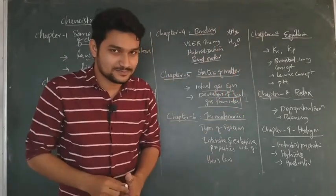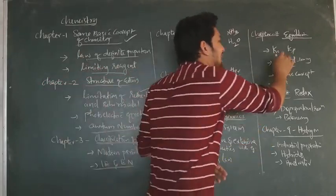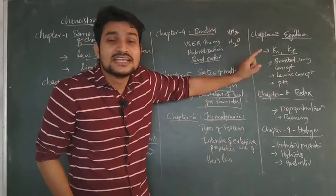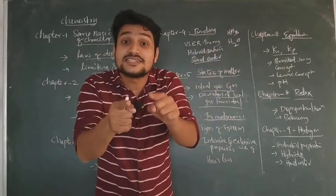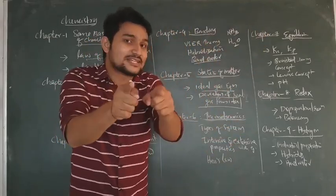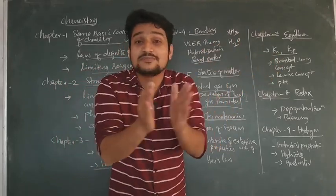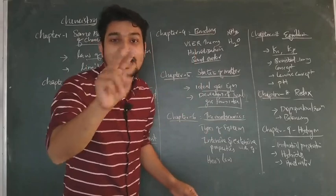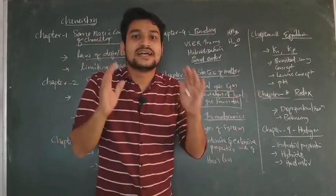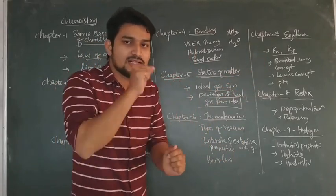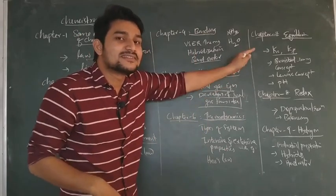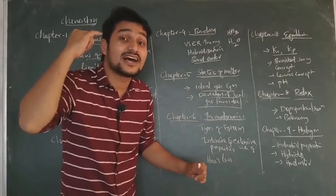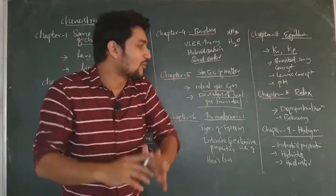Chapter 7 is equilibrium. You will learn Kc and Kp — Kc is the equilibrium constant, and Kp is the equilibrium constant in terms of pressure. Then you will learn acid-base concepts: the Bronsted-Lowry concept and the Lewis concept. Then the pH scale — the definition of pH and numerical problems on it.